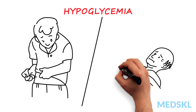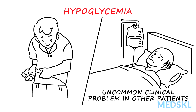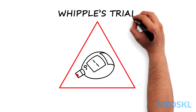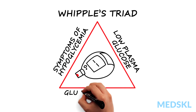Hypoglycemia is a fact of life for most people with diabetes on glucose-lowering medication. However, it is an uncommon clinical problem in other patients. There is no plasma glucose level that defines hypoglycemia. Instead, hypoglycemia is confirmed by documentation of Whipple's triad: symptoms of hypoglycemia, a low plasma glucose, and symptom resolution when glucose is administered.